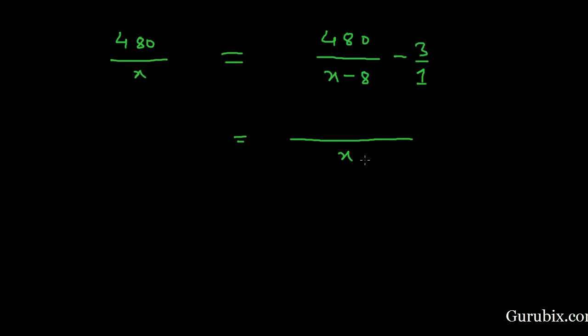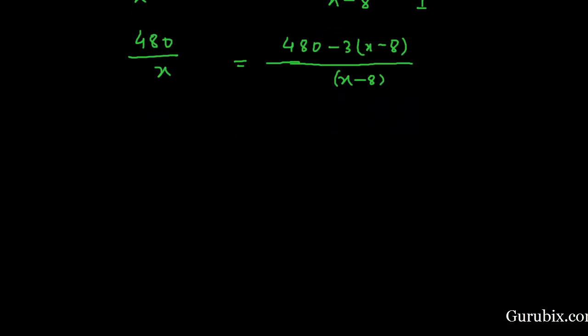Now we shall solve this equation to find the speed of the train. First of all, we shall take LCM of it. Then it will be x minus 8. Here it will be 480 minus 3 times x minus 8. Here is 480 over x.